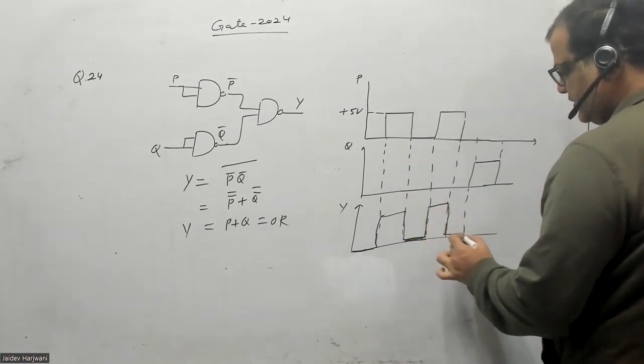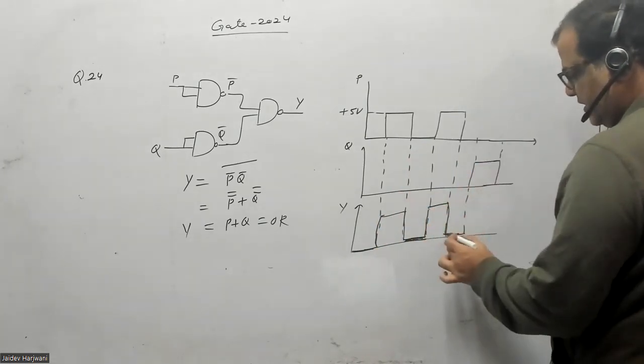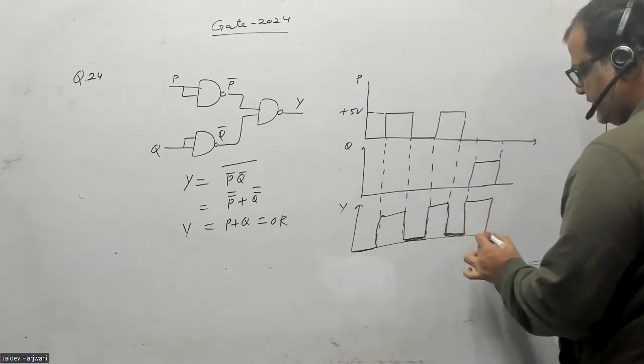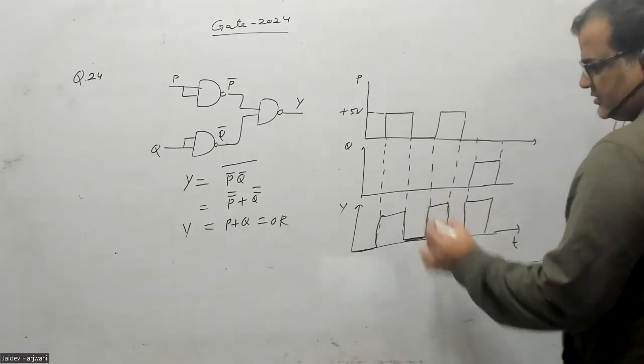5 again, 0, 0, 0, then again this will give you 5. Again this is 0, and this is again P Q, 0, 5, 5.